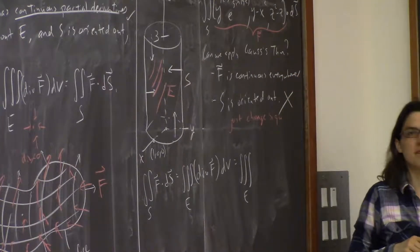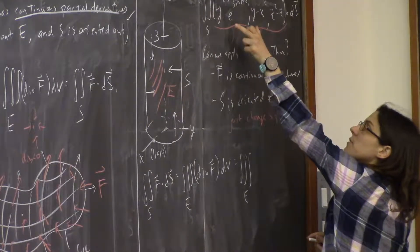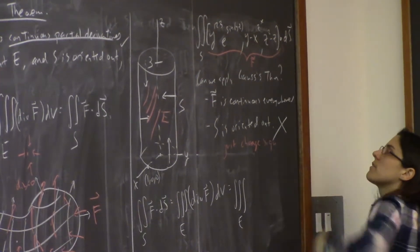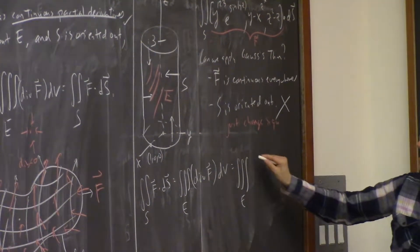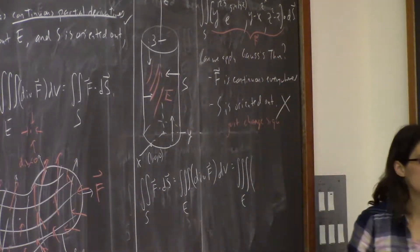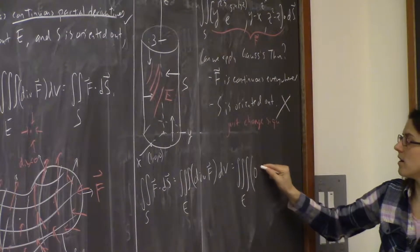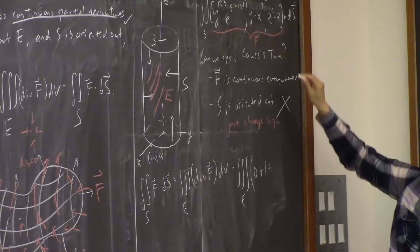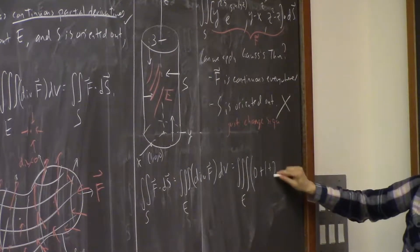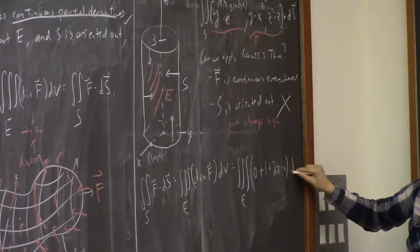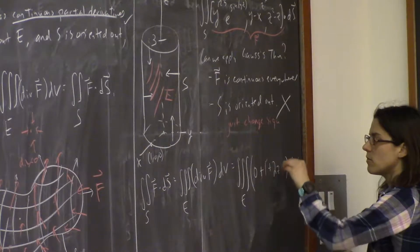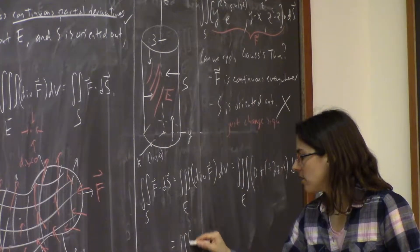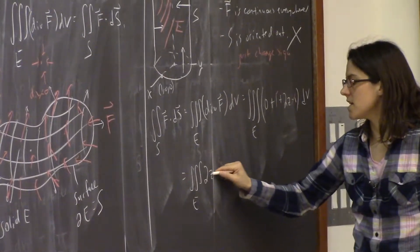We have to find the divergence: it's the partial derivative of the first component with respect to x, plus the partial of the second with respect to y, plus the partial of the third with respect to z. Partial of the first with respect to x: zero — no x's in it. Plus partial of the second with respect to y: one. Plus partial of the last with respect to z: 2z − 1. The ones cancel, giving us 2z.